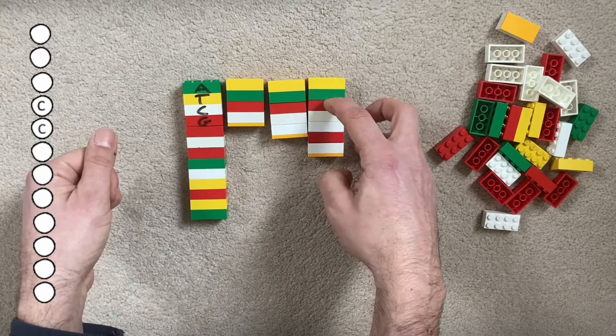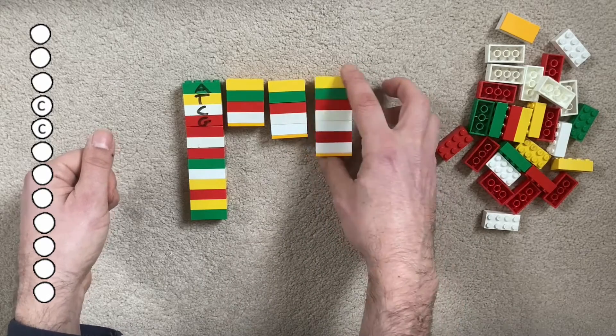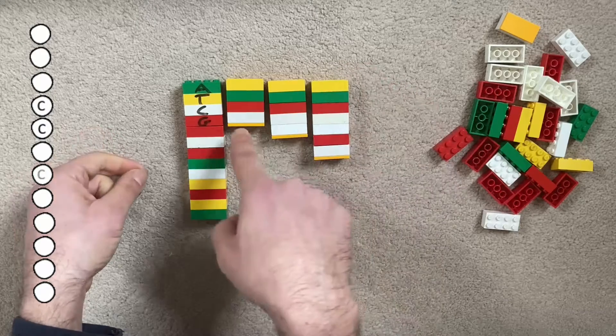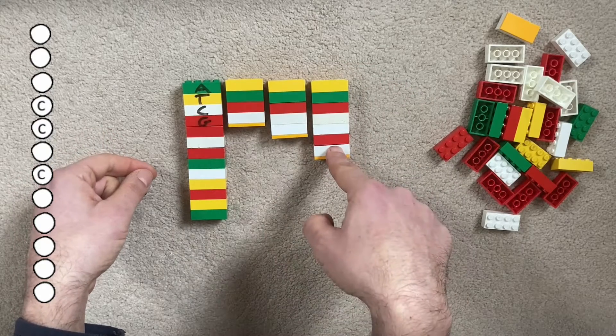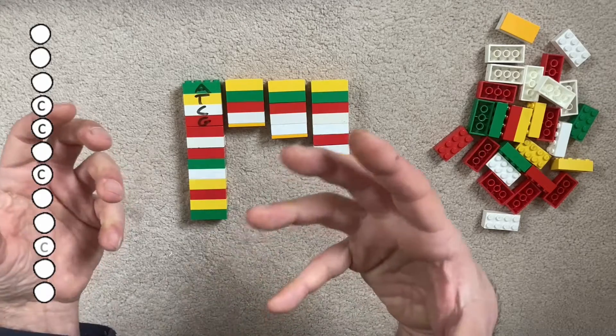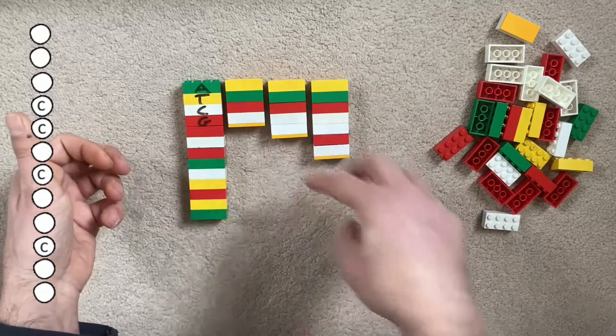And this fragment one, two, three, four, five, six, seven is seven bases long. So now I know that the fourth, the fifth, and the seventh base are C's in this complementary strand.